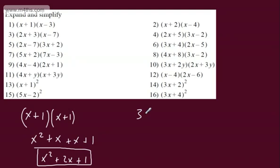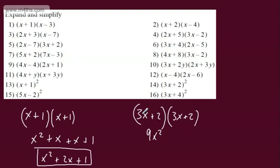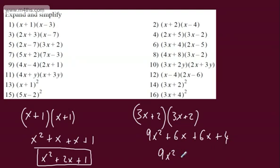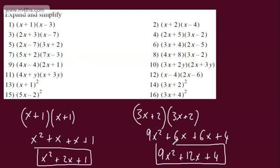This one: 3x plus 2 all squared means 3x plus 2 multiplied by 3x plus 2. First terms: 9x squared. Outer terms: plus 6x. Inner terms: plus 6x. And last terms: plus 4. Collecting up: 9x squared plus 12x plus 4. That is expanded and simplified.